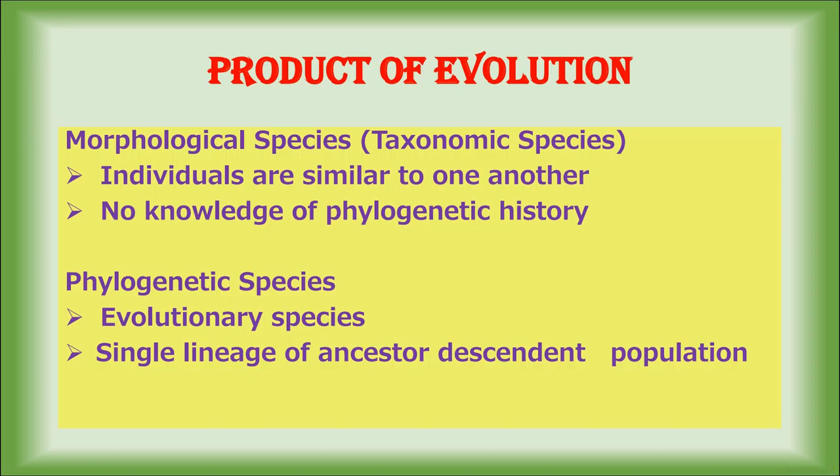The product of evolution includes morphological species and phylogenetic species. Morphological species are considered as taxonomic species; here the individuals are similar to each other and there is no knowledge of their phylogenetic history. Phylogenetic species are evolutionary species — they are a single lineage of ancestor-descendant populations that have come from a single ancestor with a single line of descendants.